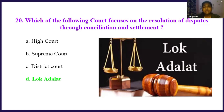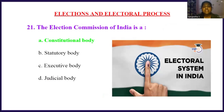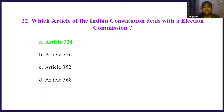The next concept is elections and electoral process. The election commission of India is: Option A, a constitutional body. Option B, a statutory body. Option C, an executive body. Option D, a judicial body. The right answer is option A, a constitutional body. Which article of the Indian constitution deals with the election commission? The right answer is Article 324. Article 324 of the Indian constitution deals with the election commission.